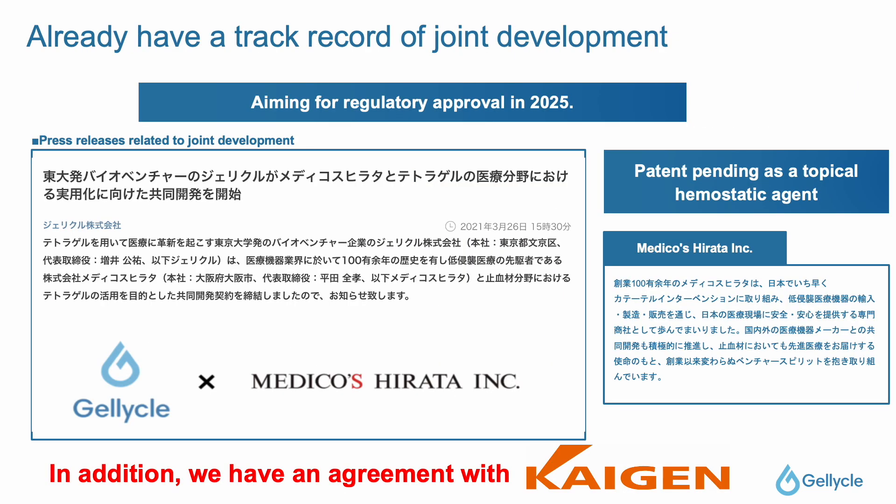We already have many achievements. Focusing on companies in the Kansai region, for example, we are working with Medicos Hirata on the development of hemostatic agents and are collaborating with them toward regulatory approval in 2025. We also recently announced a partnership with Kaigen Pharma, and we believe that we have good chemistry with companies in the Kansai region.